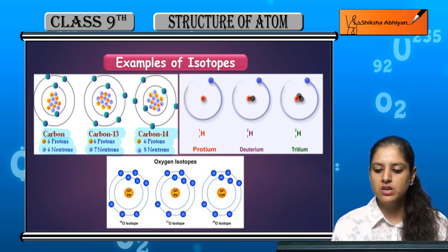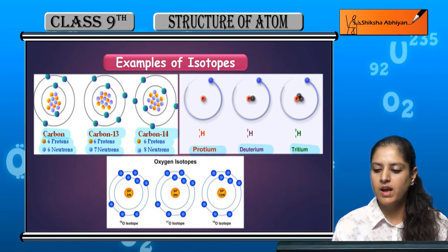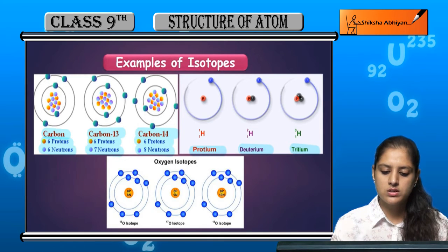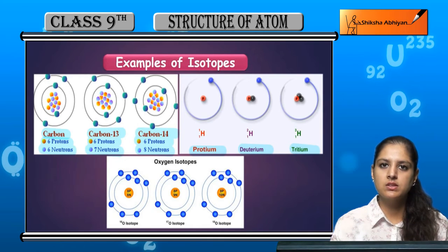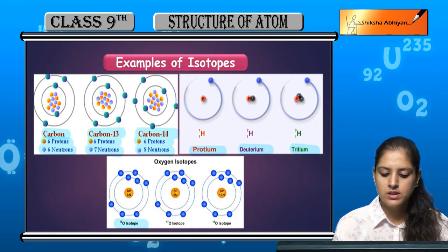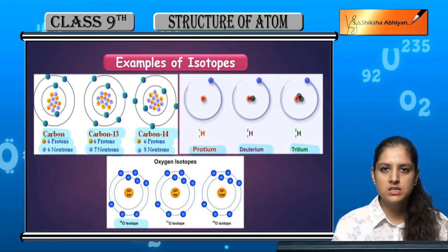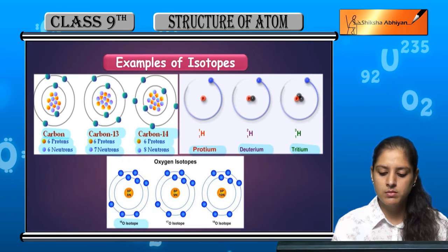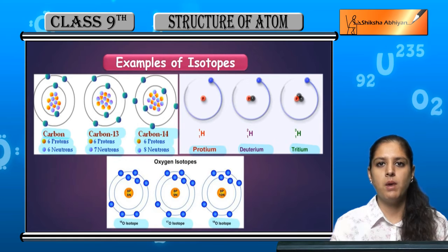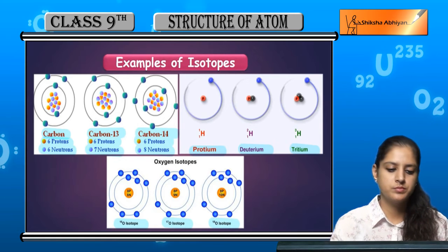And for oxygen there are three isotopes: first having 16 as mass number, second having 17 as mass number, and third having 18 as mass number.